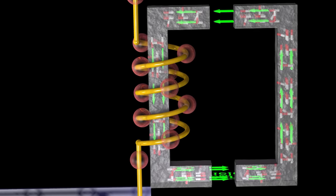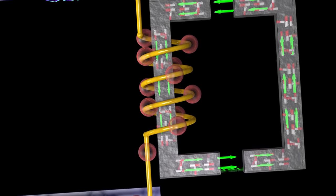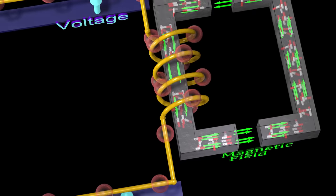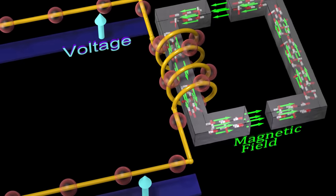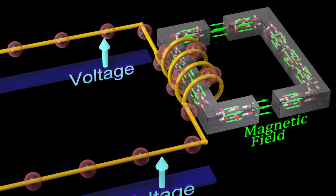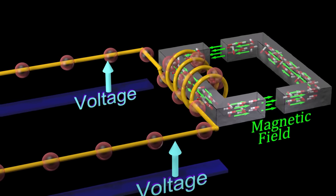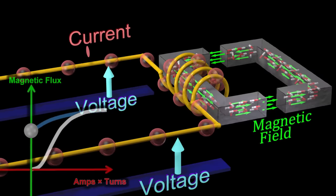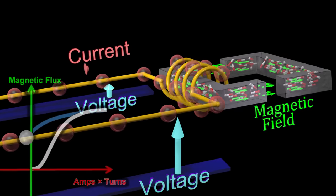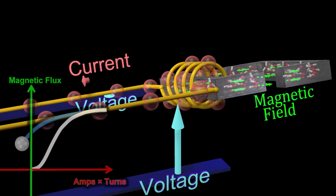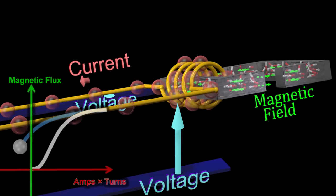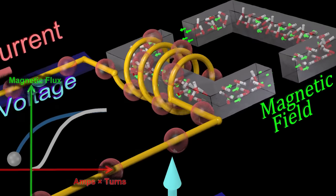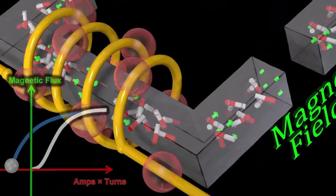We can demagnetize the material by applying a current in the opposite direction. Assuming the coil has zero resistance, the voltage difference across the coil is proportional to the rate at which the magnetic field changes. A constant voltage difference is therefore associated with a magnetic field that changes at a constant rate.